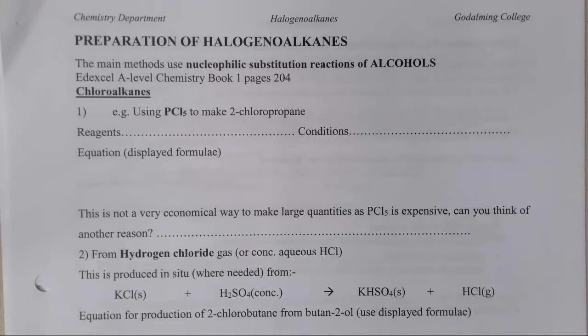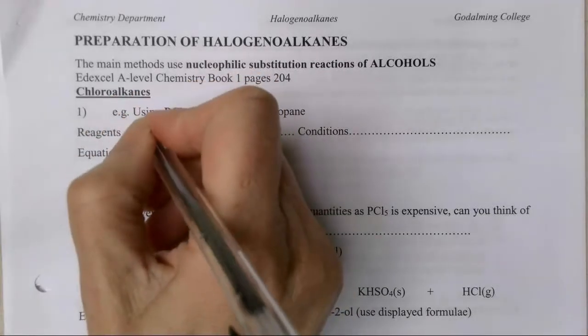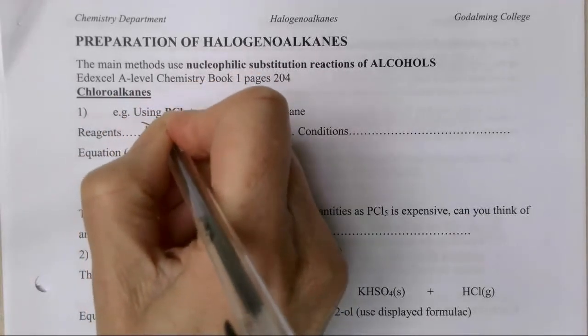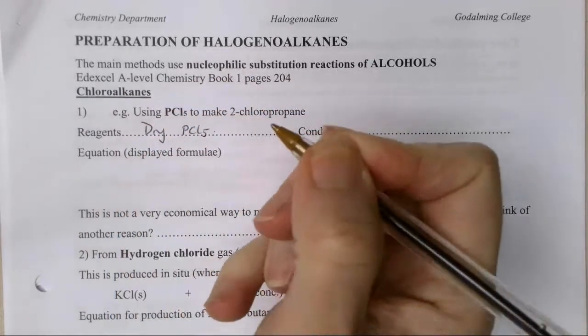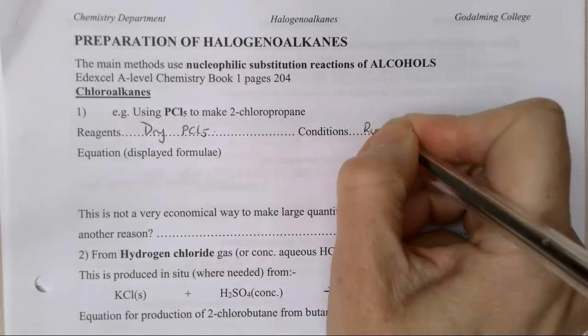The first one we're going to be looking at is the use of PCl5 to make a chloroalkane. You've already come across this in the alcohols pack because this is the way that we test for an OH group by replacing the OH group with a chlorine.